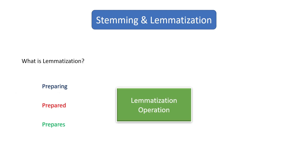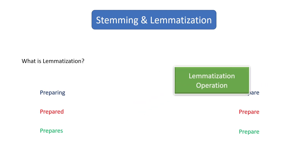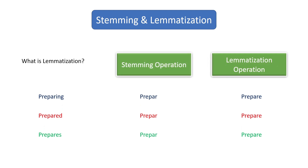Now what is lemmatization? Let's see lemmatization in action. Taking all three words and performing lemmatization, this time we get 'prepare', which is a proper English word with meaning. Comparing the output of lemmatization with stemming: the inputs are the same but the outputs are slightly different. The output from lemmatization is meaningful, while the one from stemming is not — that is the major difference. Also, stemming is very fast but lemmatization is a little slower, and lemmatization is more accurate while stemming is less accurate.